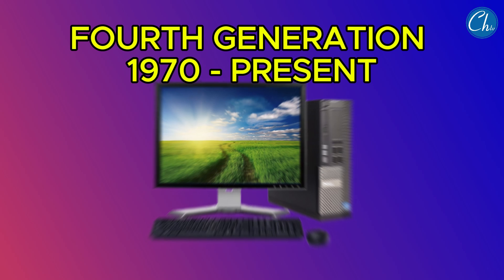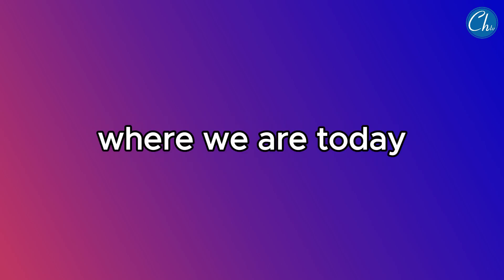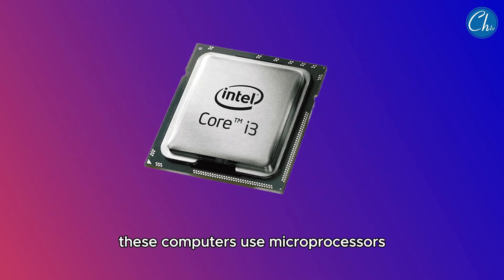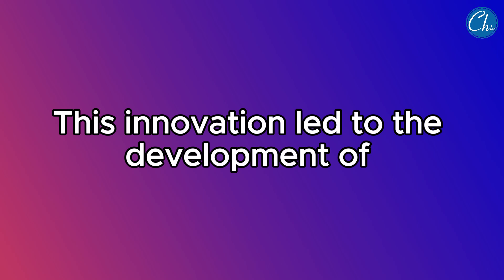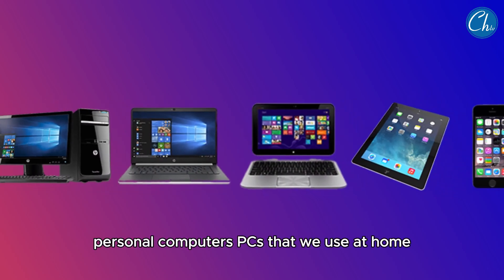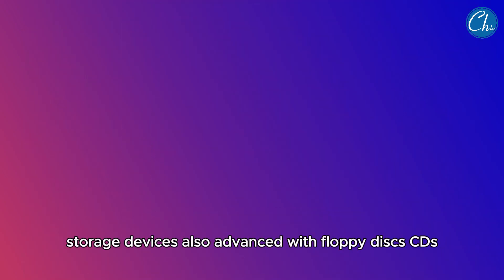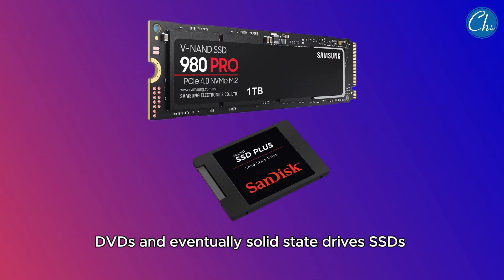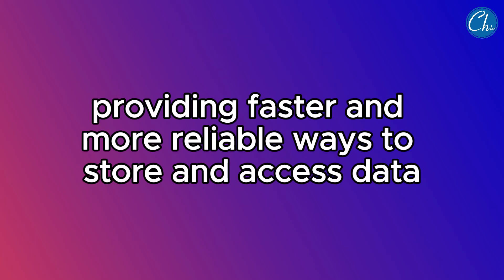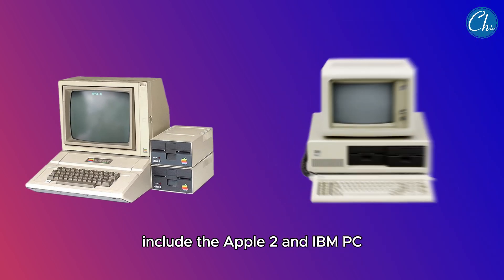Now we arrive at the fourth generation, from the 1970s to the present. These computers use microprocessors — entire computer processors on a single chip. This innovation led to the development of personal computers, or PCs, that we use at home, school, and work. Storage devices also advanced, with floppy disks, CDs, DVDs, and eventually solid-state drives, or SSDs, providing faster and more reliable ways to store and access data. Examples of fourth-generation computers include the Apple II and IBM PC.